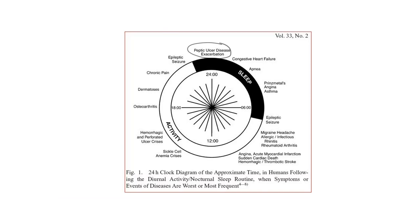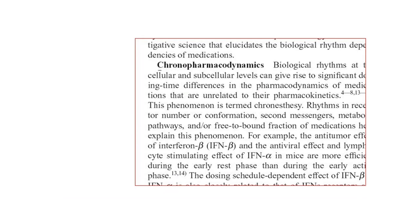For example, peptic ulcer exacerbation, congestive heart failure, apnea, Prinzmetal's angina, bronchial asthma, epileptic seizures, chronic pain, and so on — several of these conditions show exacerbations and remissions depending on the day-night cycle and other biological rhythms. New terms such as chronopharmacodynamics and chronopharmacokinetics are being used because certain interventions have been shown to be influenced by biorhythms — maybe their absorption, excretion, distribution and so on. These are new developments in the field of biomedical sciences.